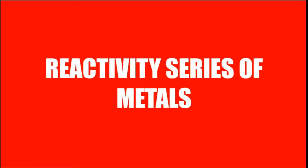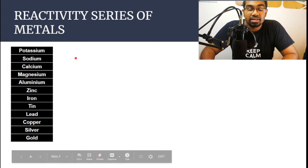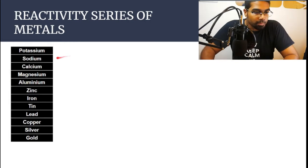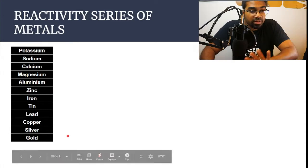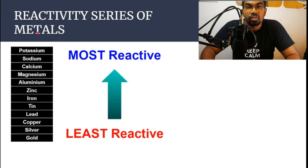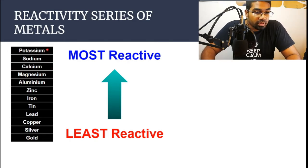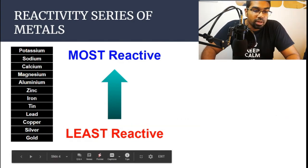Let's take a look at what the reactivity series of metals looks like. It is basically a list of metals arranged according to their reactivity. This list is very similar to the ECS electrochemical series — if you haven't seen the video on ECS, the link is at the corner. In this video we are not going to be looking at the position of hydrogen and carbon; I will be covering that in another video. The arrangement is from most reactive to least reactive. The metals at the top — such as potassium, sodium and calcium — are the most reactive, while copper, silver and gold at the bottom are the least reactive.